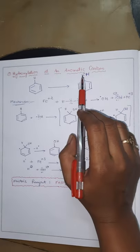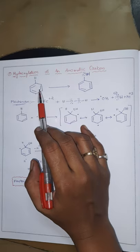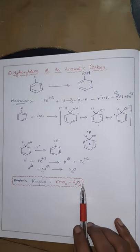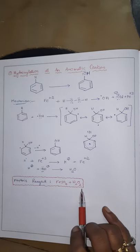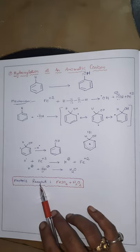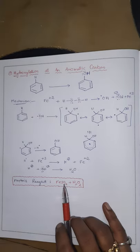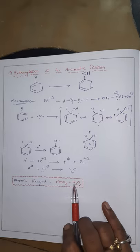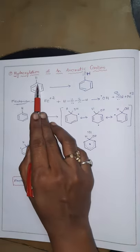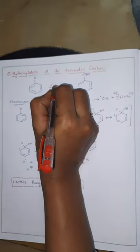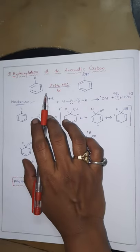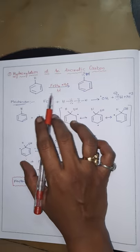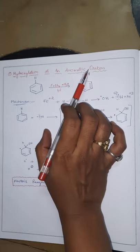We can't directly substitute a hydroxy group in an aromatic ring. By using Fenton's reagent, we can do this. The mixture of ferrous sulfate and hydrogen peroxide is known as Fenton's reagent. By using this reagent — that means FeSO₄ and H₂O₂ mixture — in the presence of light, we can hydroxylate an aromatic carbon.